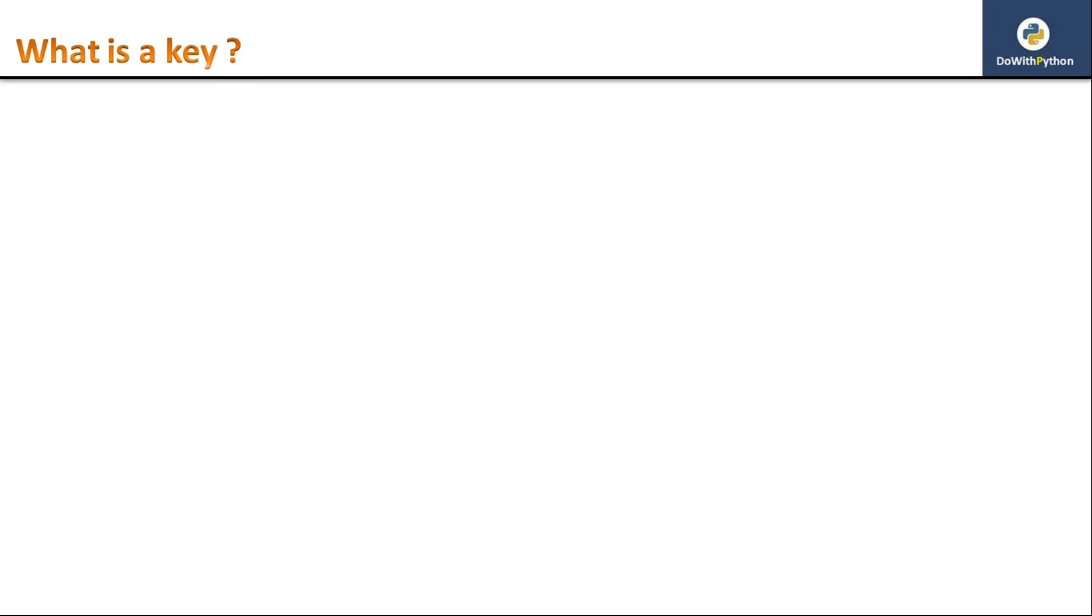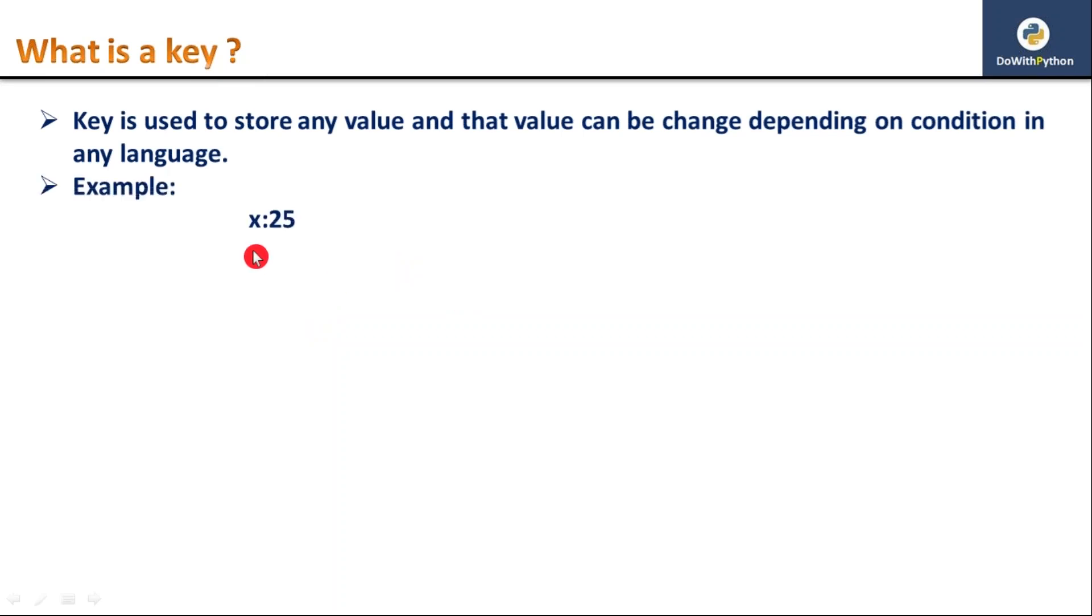Now whatever value you are going to assign into a variable in other programming languages, that value here we are going to assign to a key. Nothing different is there - both key and variable both are same. Observe here, key is used to store any value and that value can be changed depending on condition in any language.